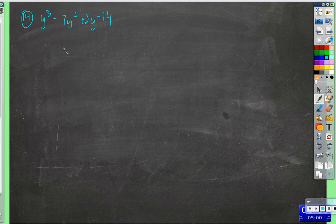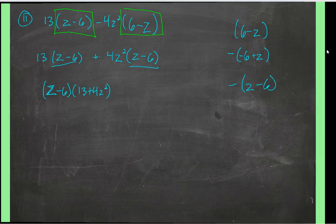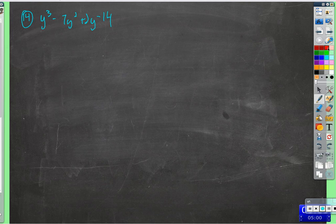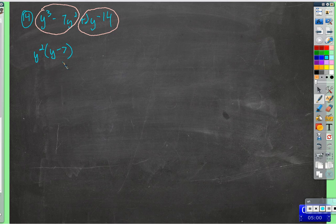The next one. This is where factor by grouping really applies. We want to take this and turn it into something where we have a common factor we can take out. We'll group these two together and these two together, and in each group we'll see what they have in common. These first two have a y squared in common. Distributing y squared into y gives y to the third; y squared times negative 7 is negative 7y squared.